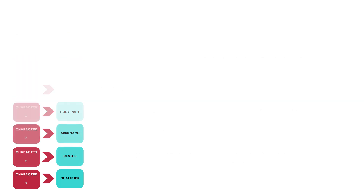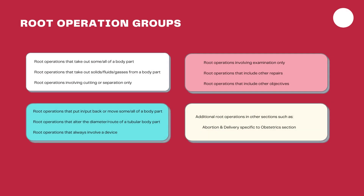These 31 root operations are grouped into nine different groups with similar attributes: root operations that take out some or all of a body part; root operations that take out solids, fluids, or gases from a body part; root operations involving cutting or separation only; root operations that put back, put in, or move some or all of a body part; root operations that alter the diameter or route of a tubular body part; root operations that always involve a device; root operations involving examination only; root operations that include other repairs; and root operations that include other objectives. Apart from that, you also have root operations in ancillary and other sections of PCS.